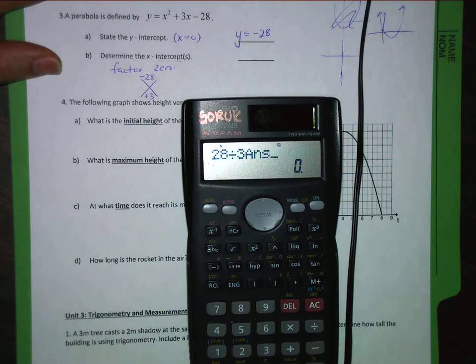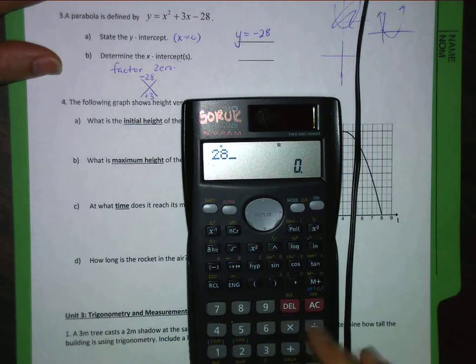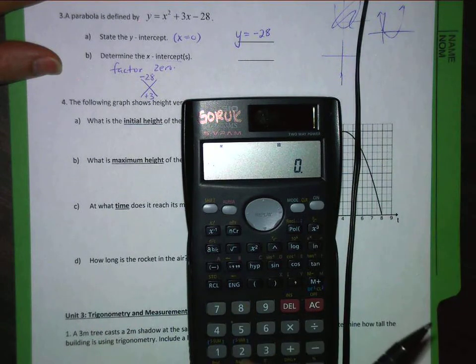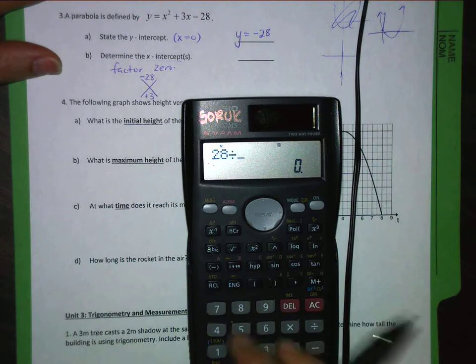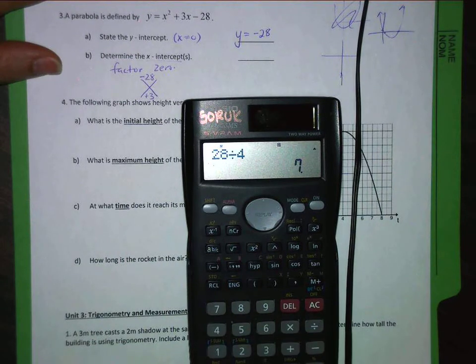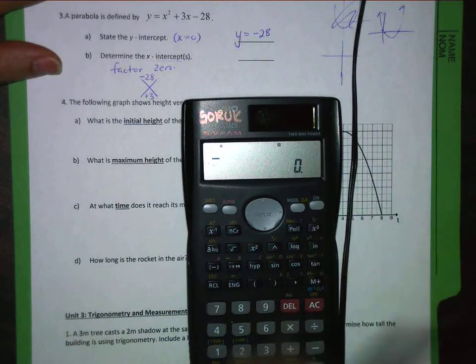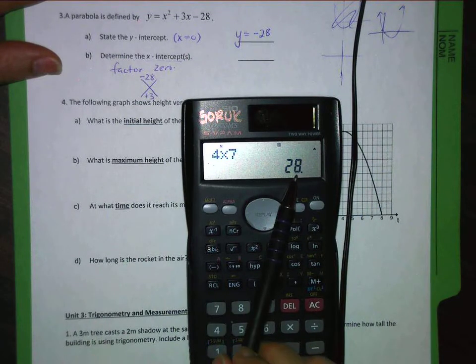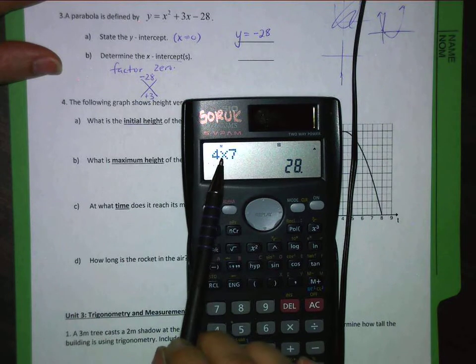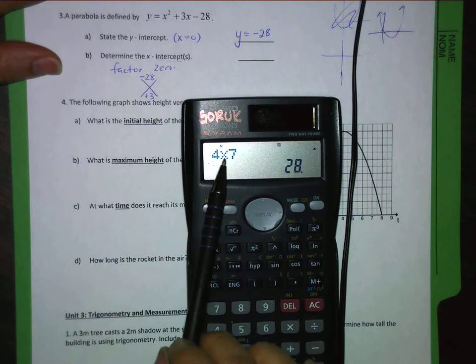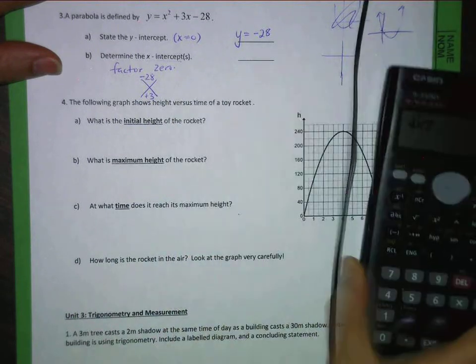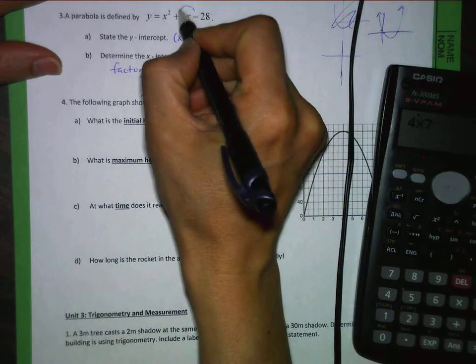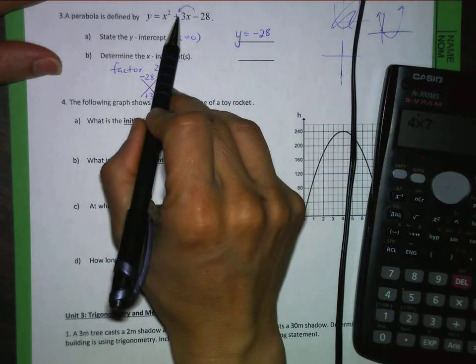Is 28 divisible by 4? Oh, it is. So 4 times 7 equals 28. And hang on, let's think about that. The difference between 4 and 7 is 3. So that sounds good because they need to subtract to be 3 because I have a negative sign here.